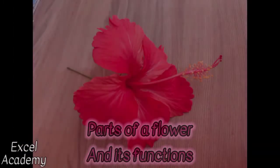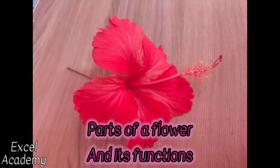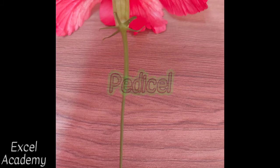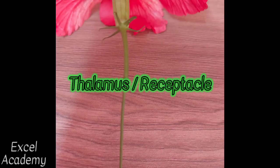Parts of a typical flower and its functions. The first part of the flower is pedicil. A flower is attached to the shoot by a stalk called pedicil.